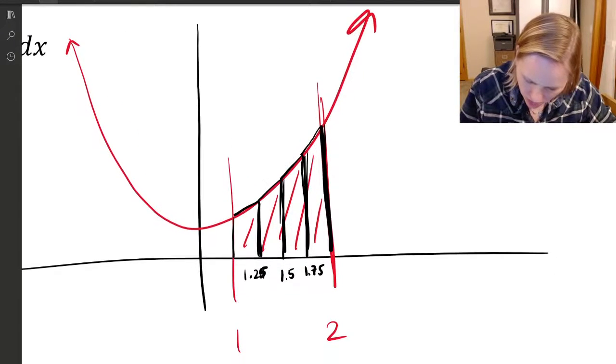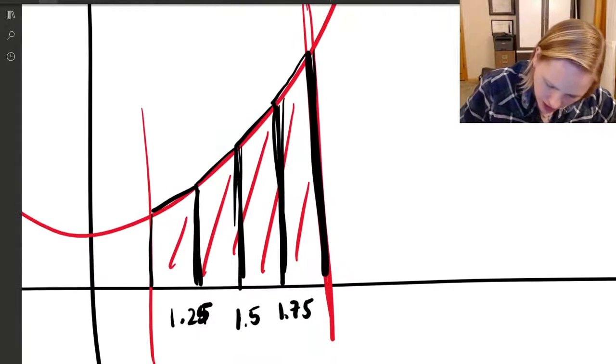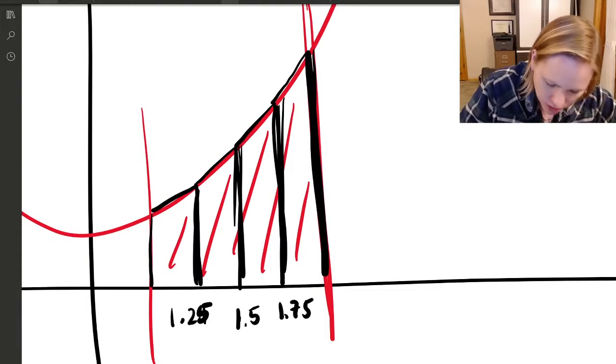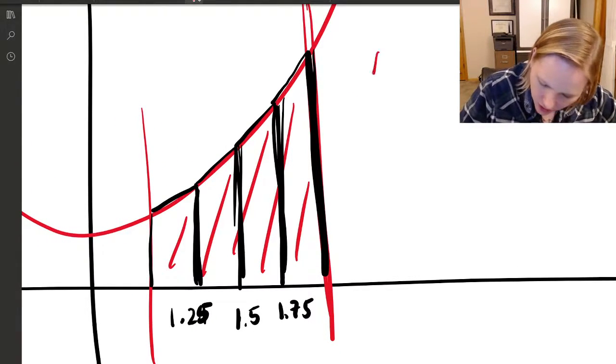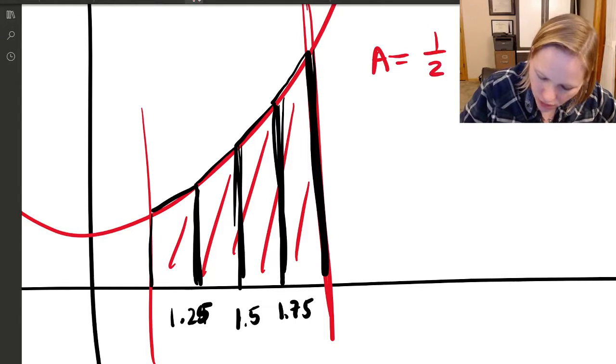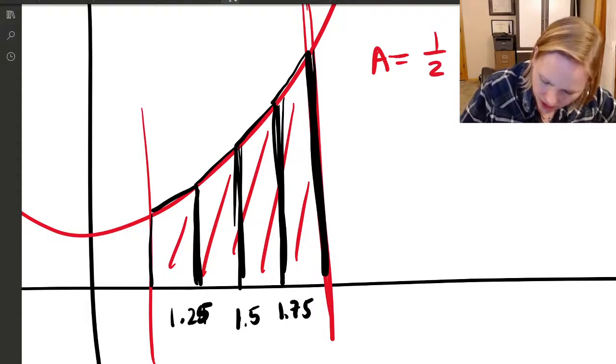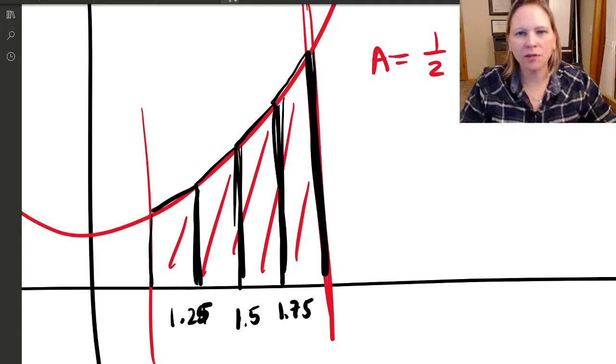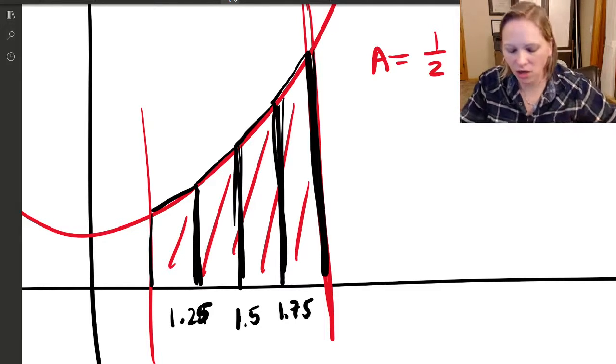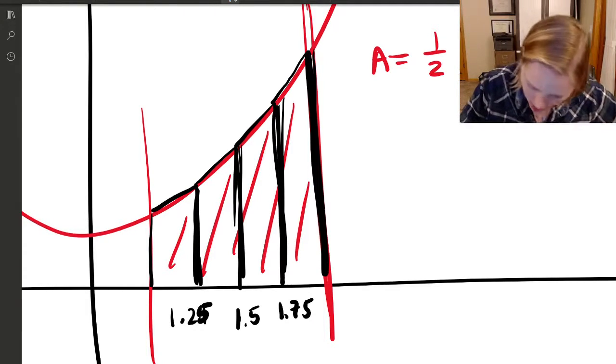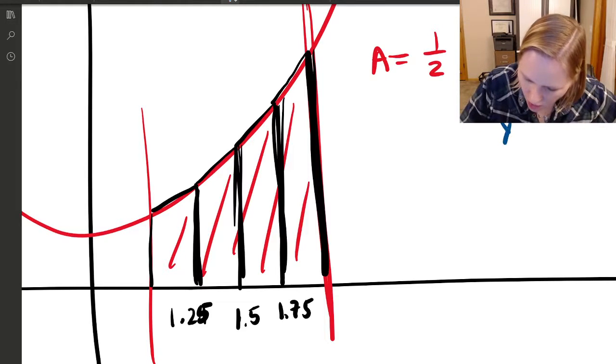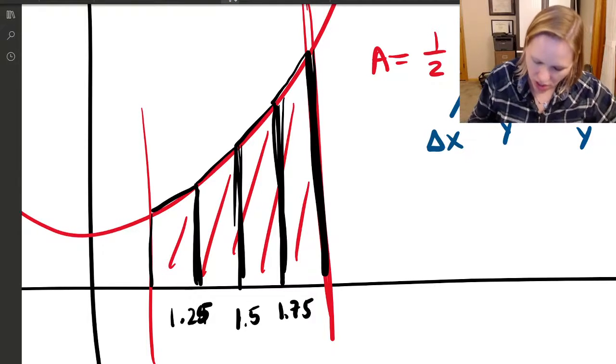The shape of the trapezoid, the area formula requires you to know a height and then base one plus base two. We've seen this before. B1 and B2, these are the y's. H is the width, it's the delta x.